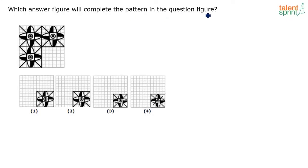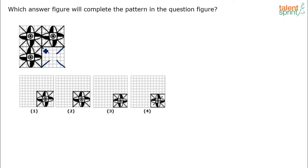Which answer figure will complete the pattern in the question figure? We have four answer figures. These questions are based on symmetric figures — there has to be symmetry, otherwise you will not be able to answer the question. So just look for that symmetry. In this question figure there are four blocks, three of which have been given to us and the fourth has to be filled. One clear observation is that each of these blocks has cross lines — like a cross — and in the center there is a square. Now try to observe this component in the answer figures. If you look at the first option, this leg of the cross is missing, so it is eliminated.